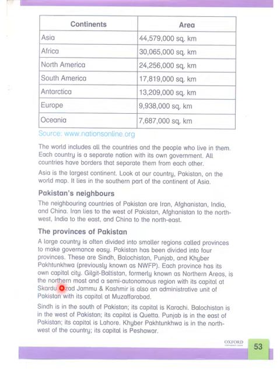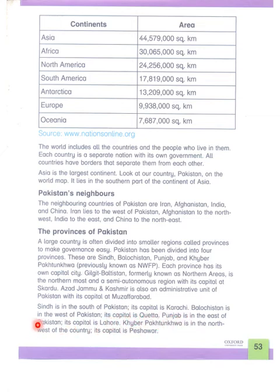Every province has its own capital city, just as Pakistan's capital is Islamabad. Sindh is in the south of Pakistan and its capital is Karachi. Balochistan is in the west and its capital is Quetta. Punjab is in the east and its capital is Lahore. Khyber Pakhtunkhwa is in the northwest and its capital is Peshawar.